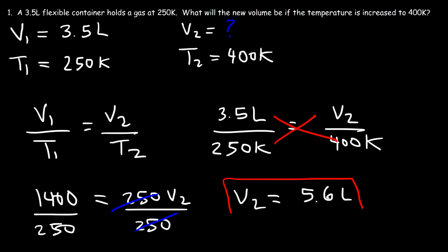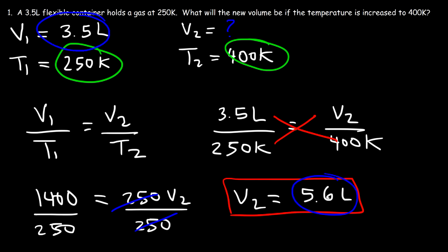As we increased the temperature from 250 Kelvin to 400 Kelvin, the volume increased from 3.5 liters to 5.6 liters — in harmony with Charles's Law. Anytime you increase the temperature, the volume will increase.